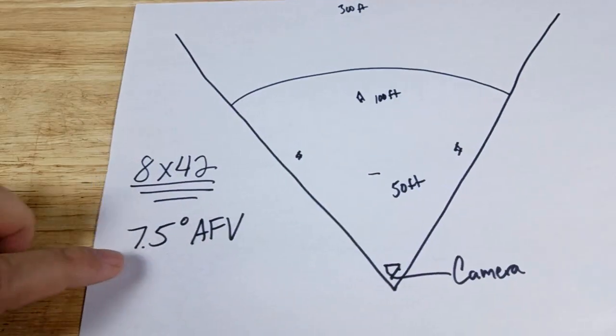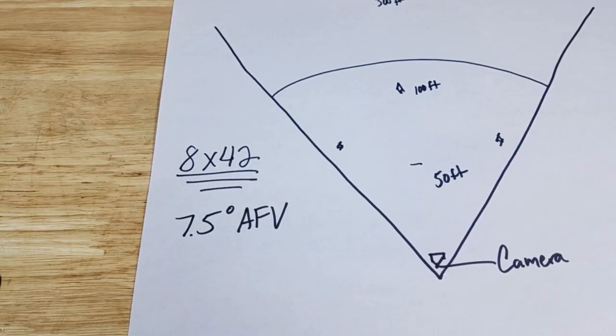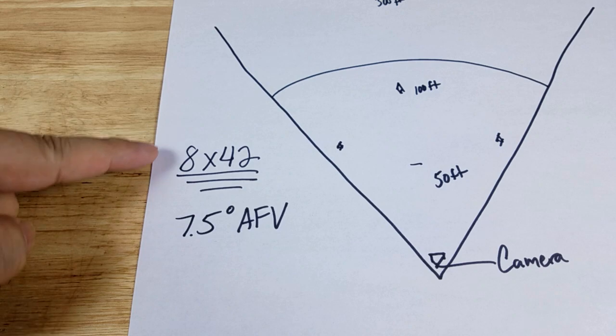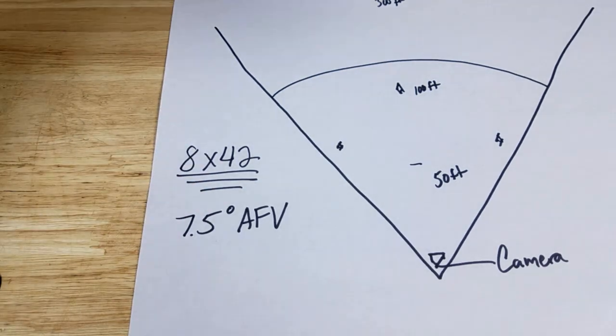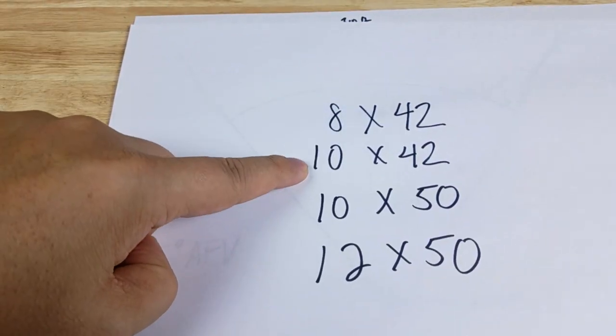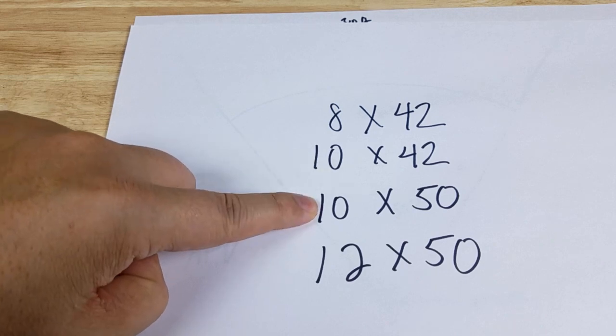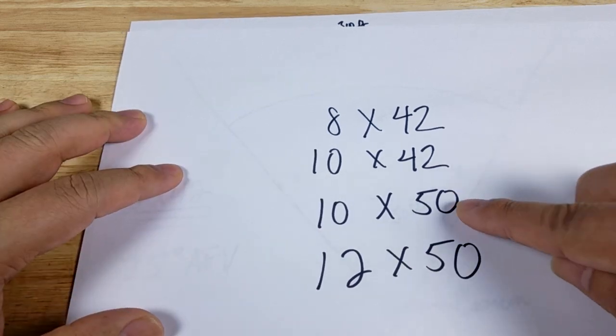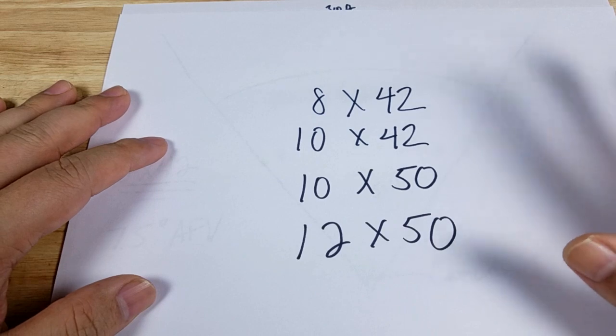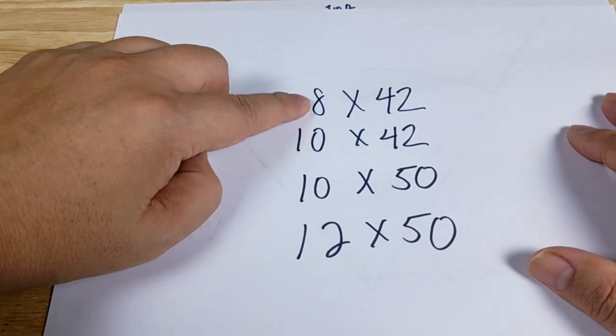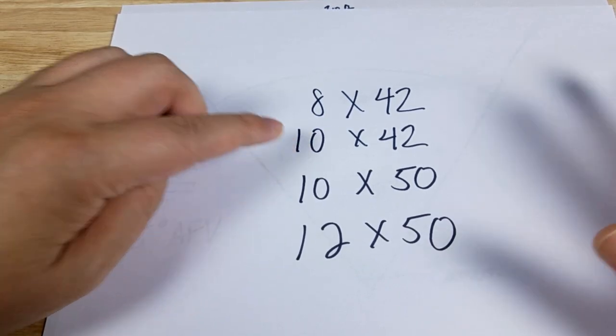The angular field of view we're going to be looking at is about 7.5 degrees. Keep this in mind: we got 8x magnification. The Crossfire comes not only in that, but also in 10x and 12x with 50 millimeter lenses.